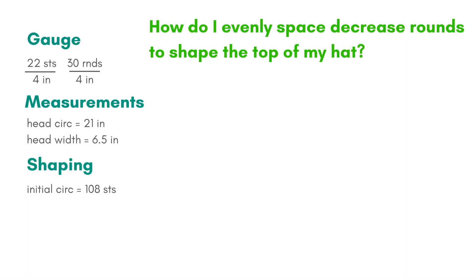Before I figure out how to evenly space my decrease rounds to shape the top of my hat, I'll note that my final circumference is going to be 12 stitches and that I'm decreasing 12 stitches in each decrease round.